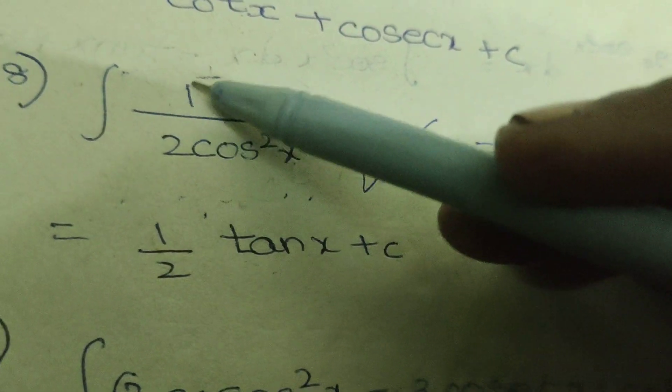Okay, according to this trigonometric formula, 1 by cos means secant. Therefore, here 1 by cos square x is there.